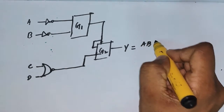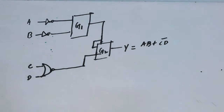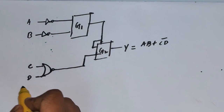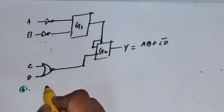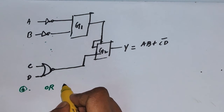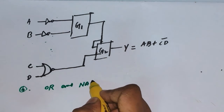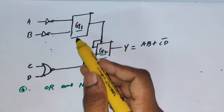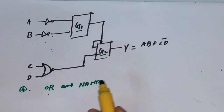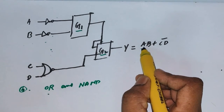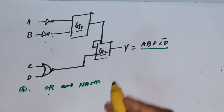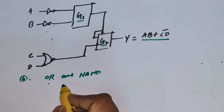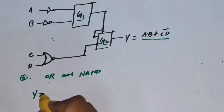The final result Y would be equal to AB plus C-bar D-bar. We are going to approach the solution using the given options. For answer option A, the first gate G1 is OR and the second gate G2 is NAND. These two are the unknown gates — G1 is OR and G2 is NAND. We want to investigate whether putting these two gates gives us the required answer.